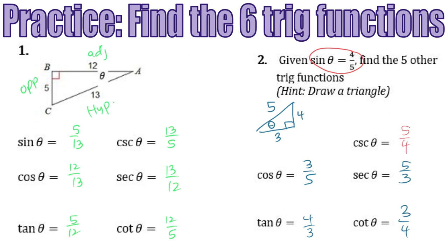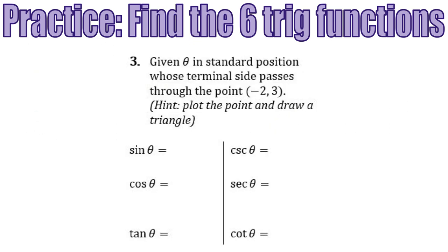Let's go ahead and look at one last type of example, and then we'll wrap up this video. Okay, for this last example, it says given θ in standard position whose terminal passes through the point (−2, 3), so my hint, sort of like on the last problem, is to always draw a picture.